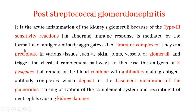These immune complexes can actually precipitate in various tissues such as the skin, the joints, the vessels, or the glomeruli, and that triggers the classical complement system. In post-streptococcal glomerulonephritis, the antigens of S. pyogenes that remain in the blood combine with the antibodies made against them, thereby forming antigen-antibody complexes. These complexes then deposit in the basement membrane of the glomerulus, which is part of the kidney.